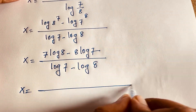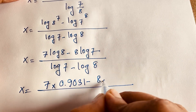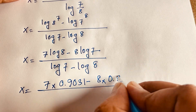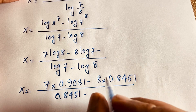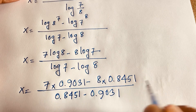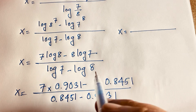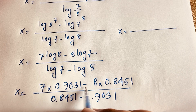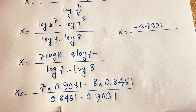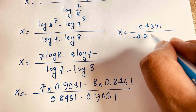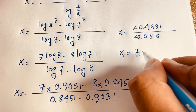Using the calculator: log 8 equals 0.9031 and log 7 equals 0.8451. So the numerator is 7 times 0.9031 minus 8 times 0.8451, which gives minus 0.4391. The denominator is 0.8451 minus 0.9031, which gives minus 0.058. The two negatives cancel, and dividing gives x equals approximately 7.571. This is the value of x in this math question.